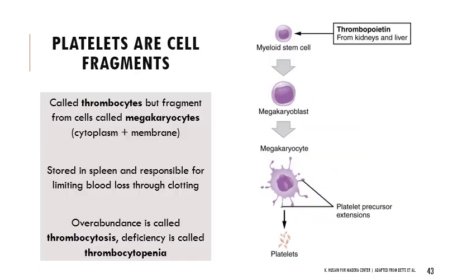The last formed element is the thrombocyte — a platelet — which is not actually a cell but a fragment of a precursor cell called a megakaryocyte. As megakaryocytes bud and branch off, they form platelets, which are basically cytoplasm surrounded by cell membrane. These are produced and then stored in the spleen, with signals coming from the kidneys and liver. They are critical for preventing hemorrhaging and blood loss through clotting.